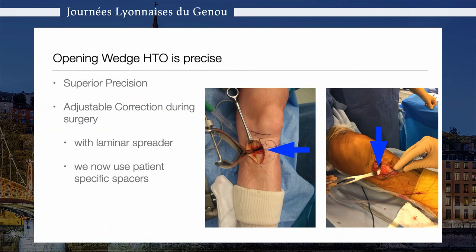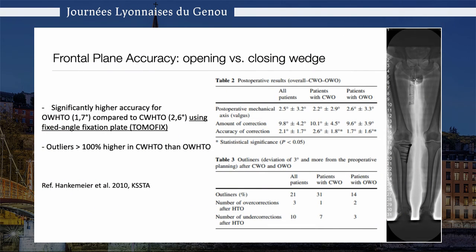Discussing precision, I think all of us have to admit that opening wedge osteotomy is precise. It has superior precision because you can adjust the correction during surgery. You can use laminar spreaders, you can use intraoperative x-ray to evaluate your correction, and you can now use patient-specific spacers — introducing modern 3D technology into clinical practice. All of this translates into superior frontal plane accuracy. Studies clearly indicate higher accuracy for opening wedge osteotomy and fewer outliers compared with closing wedge osteotomy.